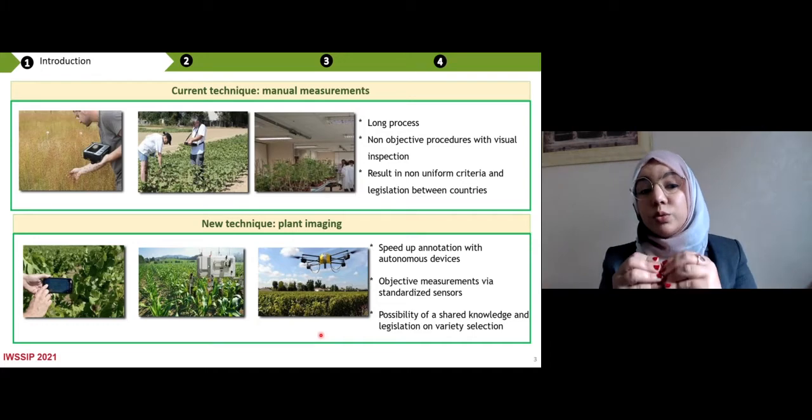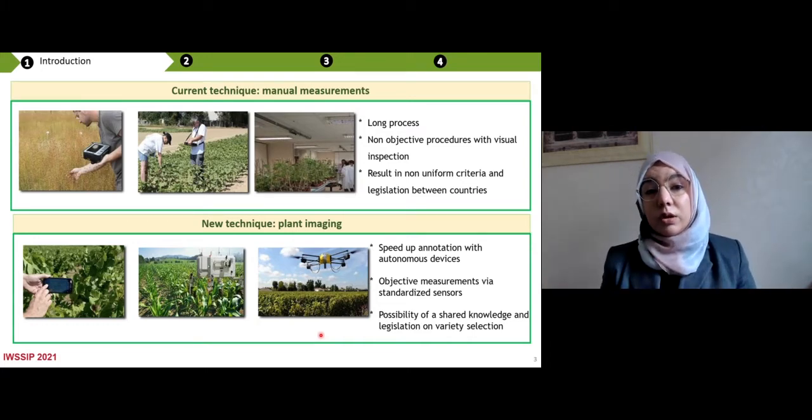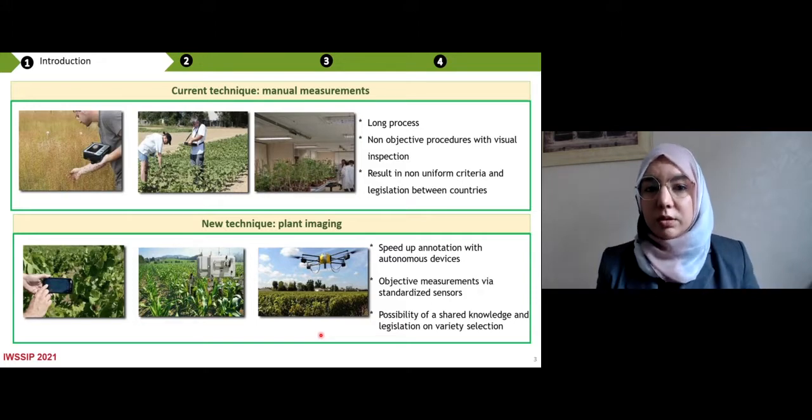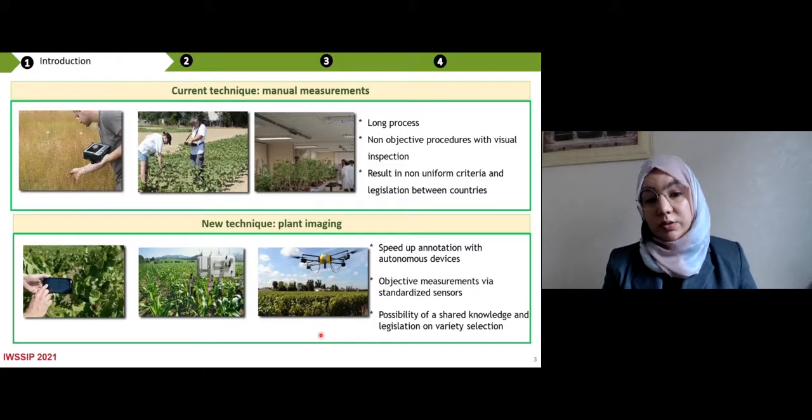And the results are non-uniform regulatory legislation between countries. So the challenge today is to move to new techniques called plant imaging, when the goal is to speed up the annotation with autonomous devices, also to get objective measurement via standard sensors.